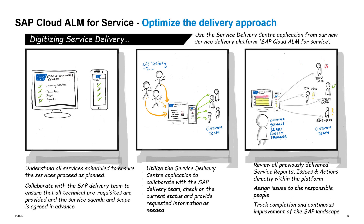With that in mind, SAP decided to transform the standard service delivery process to make locating important documents associated with each delivery less cumbersome. Now using the Service Delivery Center application from SAP Cloud ALM for Service, customers will be able to easily understand all services scheduled to ensure services proceed as planned. The application also allows users to have better visibility of their scheduled services to ensure that all technical prerequisites are provided and the service agenda and scope are agreed upon in advance. Additionally, you can check the current status of tasks and provide the requested information as needed. You'll also have the ability to review all previously delivered service reports, as well as track and assign roles to the responsible members in your organization.